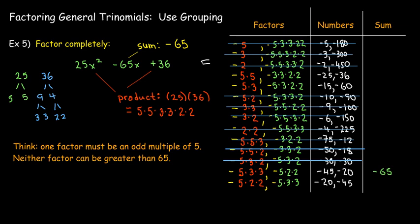Also, if either factor is bigger than 65 in absolute value, when you add them together it's going to be even bigger than 65. So I can reject any combination where a factor exceeds 65 in absolute value, and any combination that doesn't give a number ending in 5.